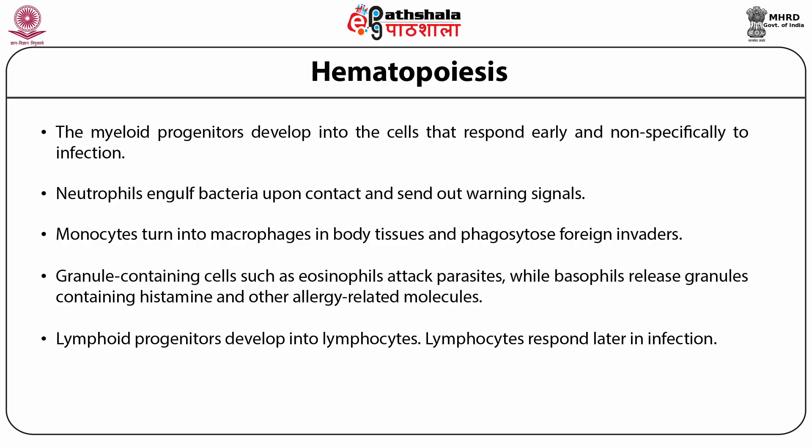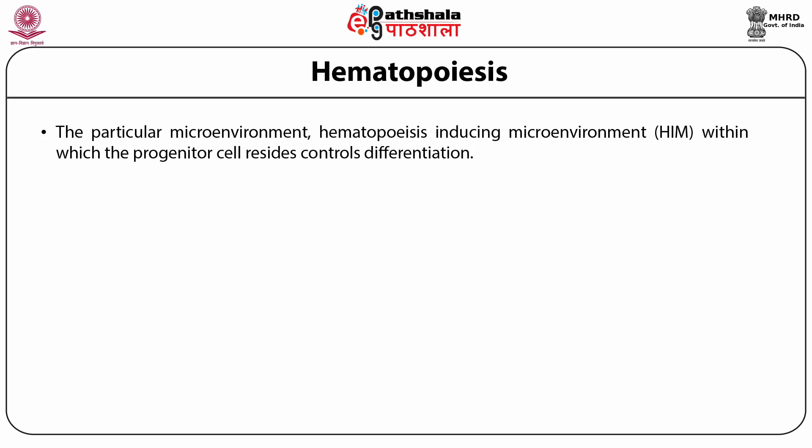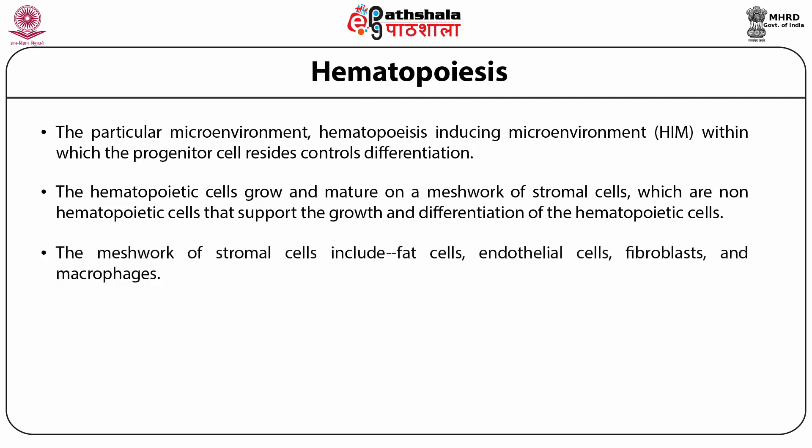Lymphoid progenitors develop into lymphocytes. Lymphocytes respond later in infection and normally mount specific attacks involving antigen-presenting cells such as dendritic cells or macrophages. Progenitor commitment depends upon the acquisition of responsiveness to certain growth factors. The particular hematopoiesis-inducing microenvironment within which the progenitor cell resides controls differentiation. The hematopoietic cells grow and mature on a meshwork of stromal cells — non-hematopoietic cells that support their growth — including fat cells, endothelial cells, fibroblasts, and macrophages.